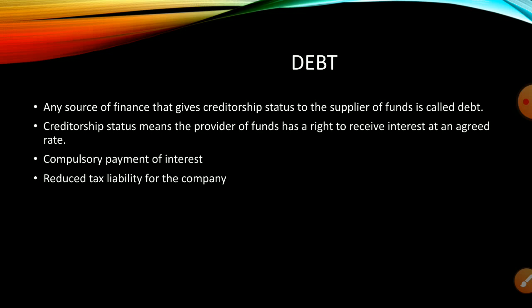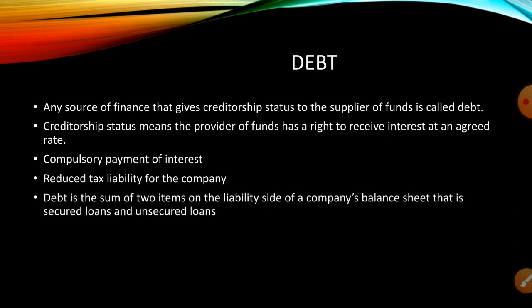There is reduced tax liability for a company that has debt in its capital structure, because interest is deducted from taxable income before calculating the tax liability. The profit on which the company pays tax is reduced when it has more debt. Debt is the sum of two items on the liability side of a company's balance sheet: secured loans and unsecured loans.